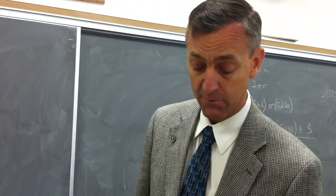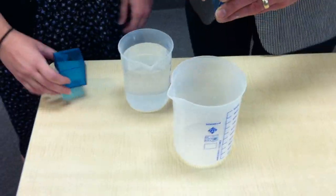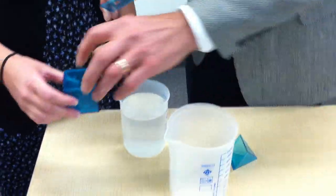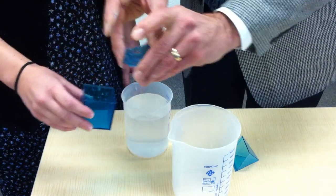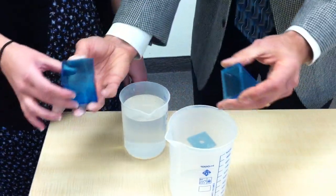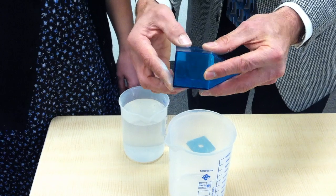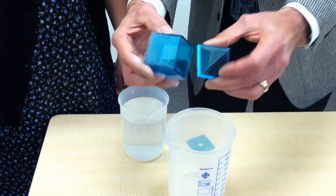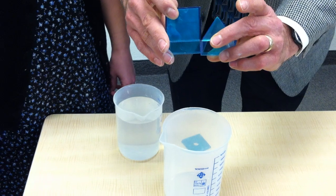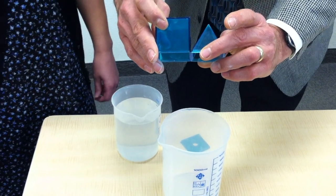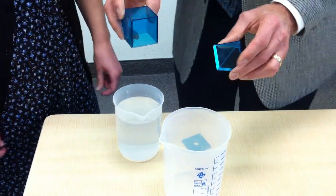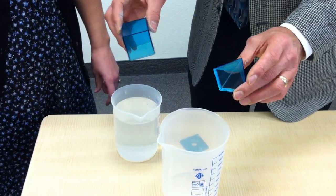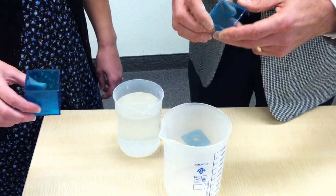We're going to do another activity to help you see what that means and develop a formula for the volume of a pyramid. What I have here is a pyramid and a prism whose base areas are identical — you'll notice the two bases are the exact same size — and the height of the two objects is exactly the same.